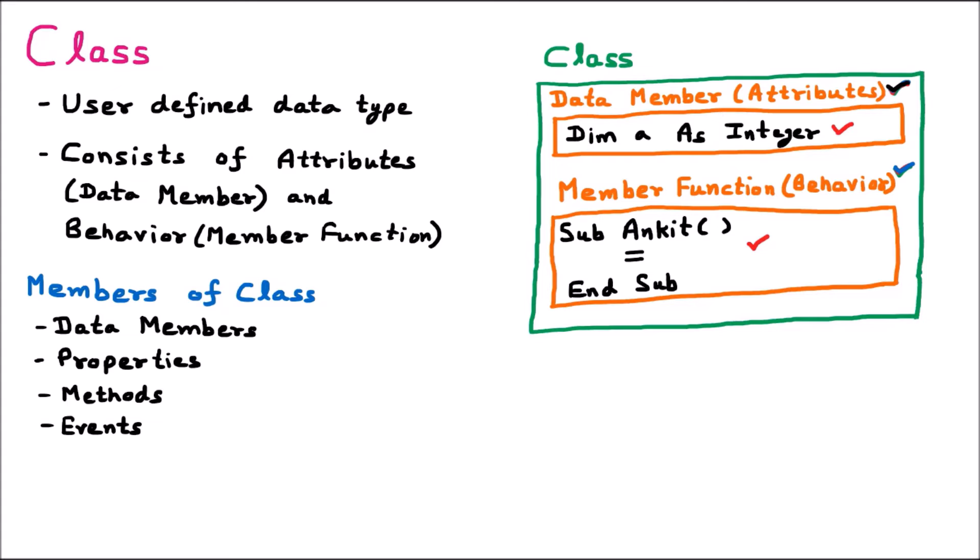So we can say there are majorly two things which are part of the class: first is the data member or attribute, and second is the member function or behavior. Within the member function or behavior, we have properties, methods, and events. These are the members of the class which can be present inside the class.